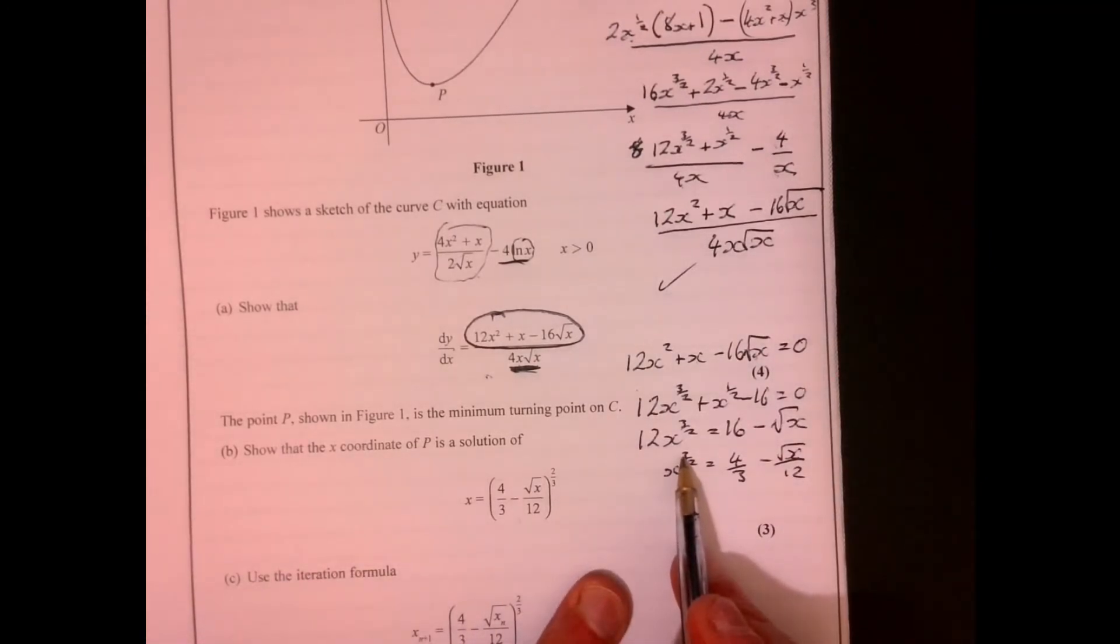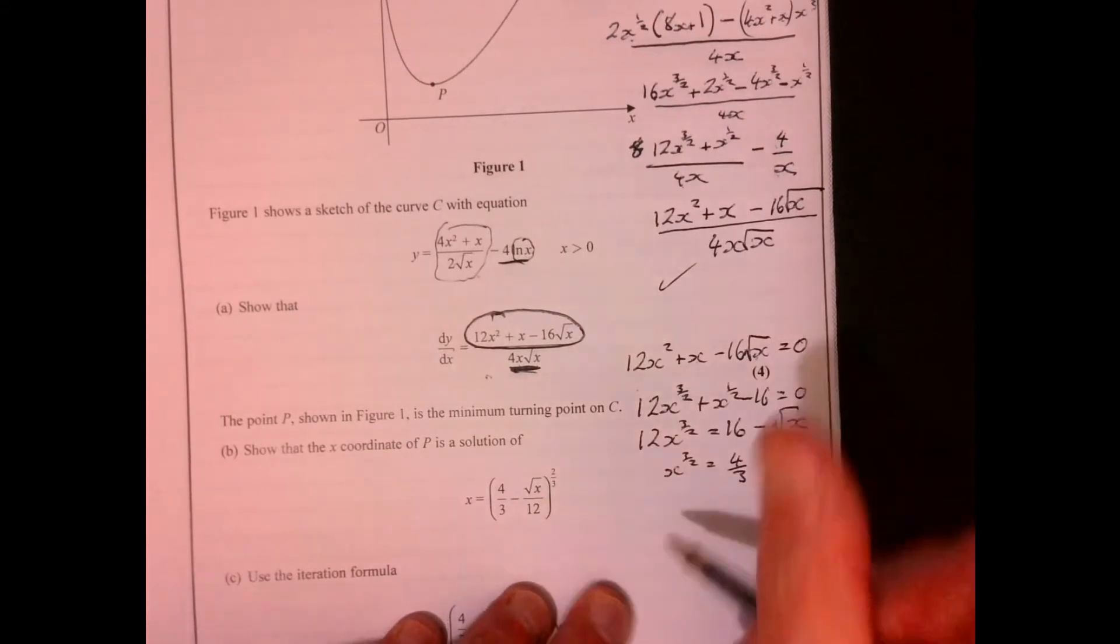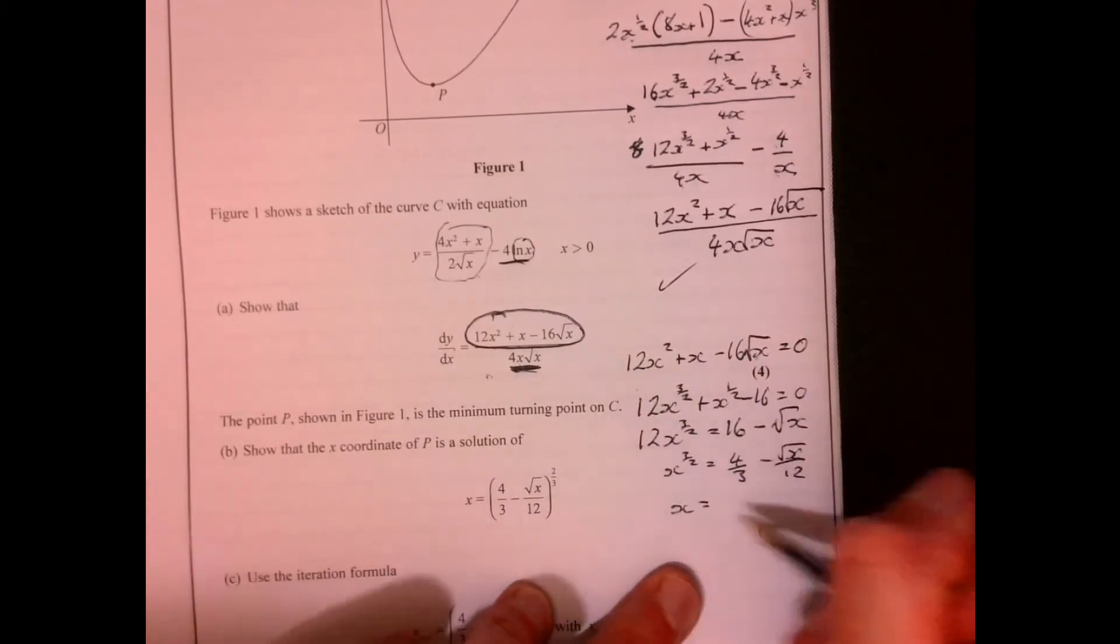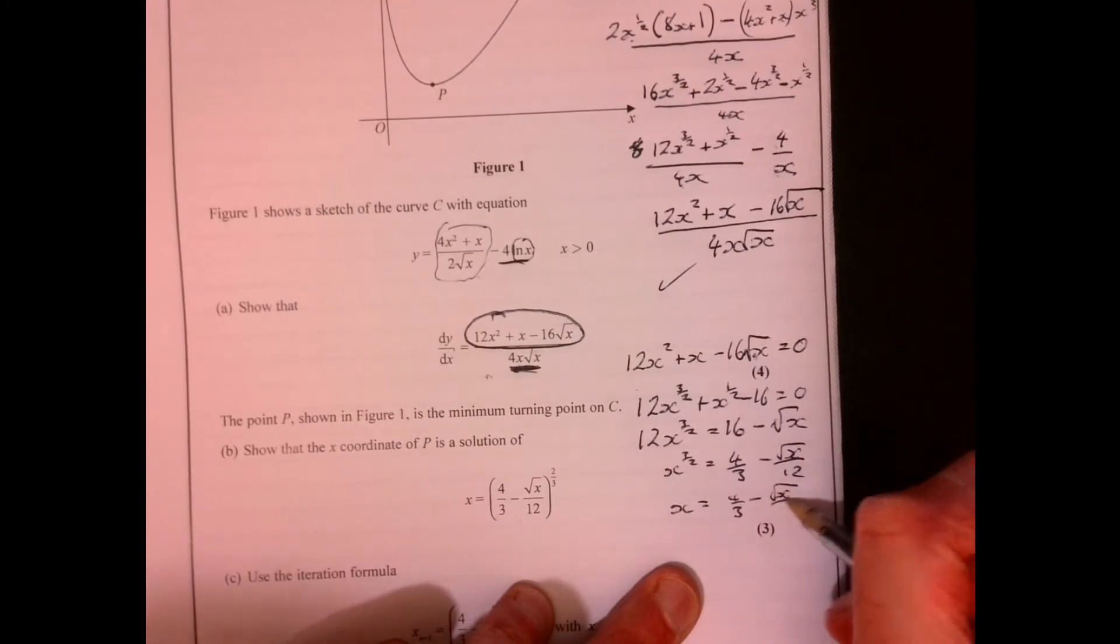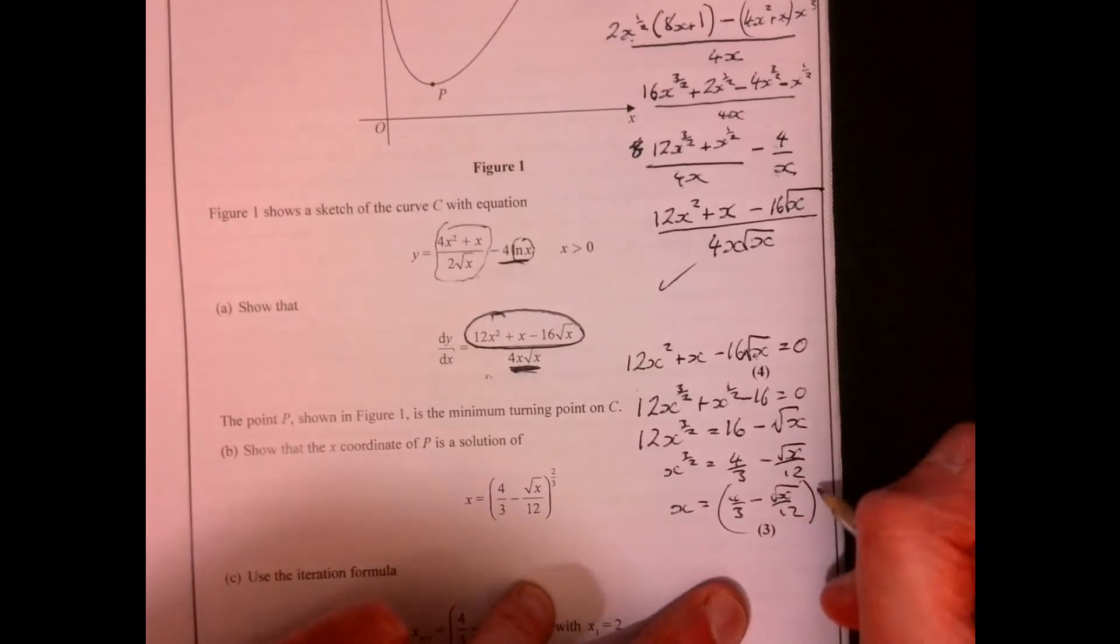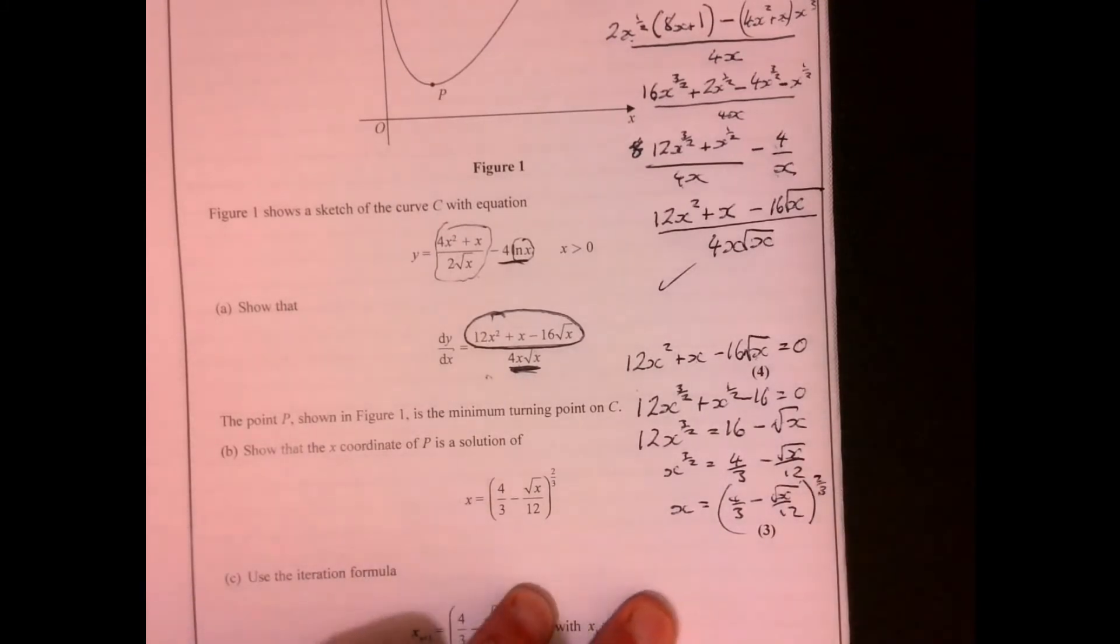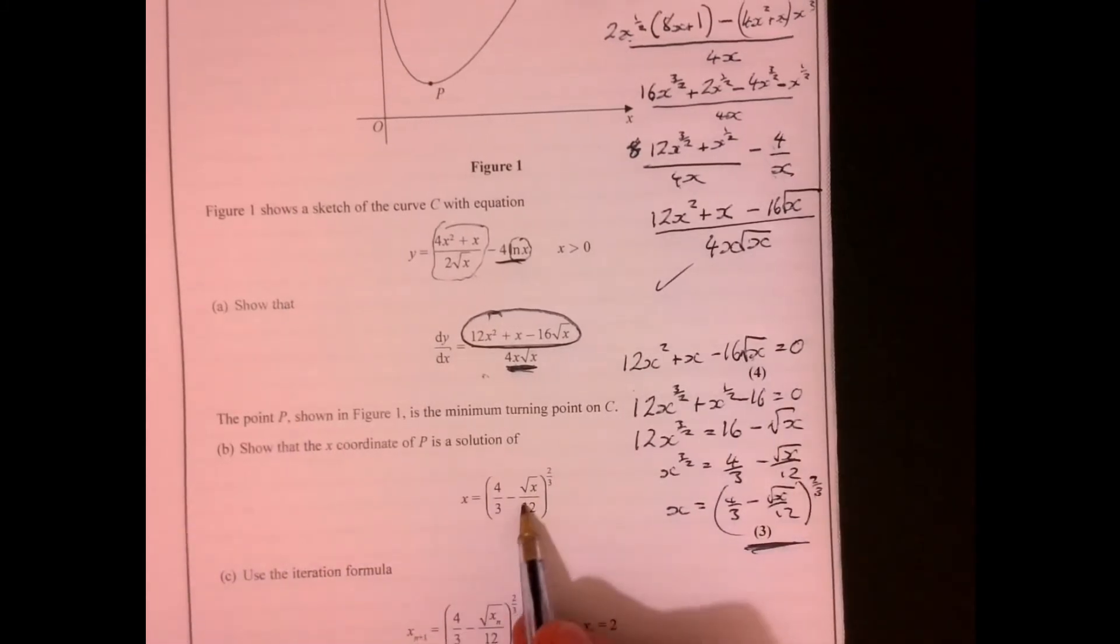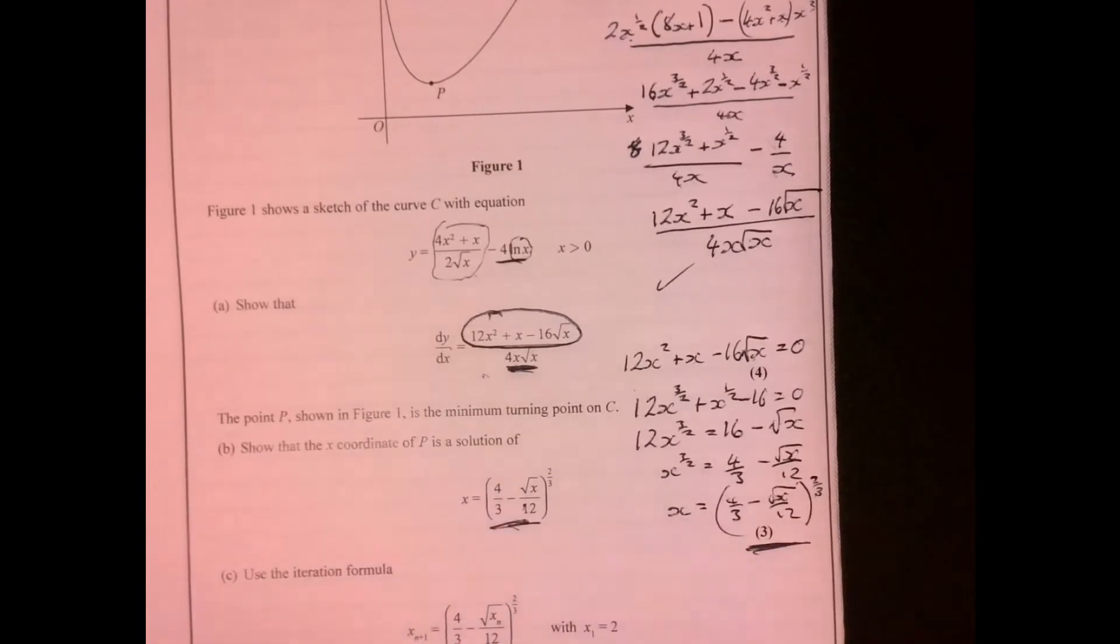And then I need to get rid of this power, so effectively I'm going to do the opposite to both sides. And then we end up getting 4/3 minus root x over 12, and opposite power is 2/3. It's just like that around doing, which is what we wanted just here.